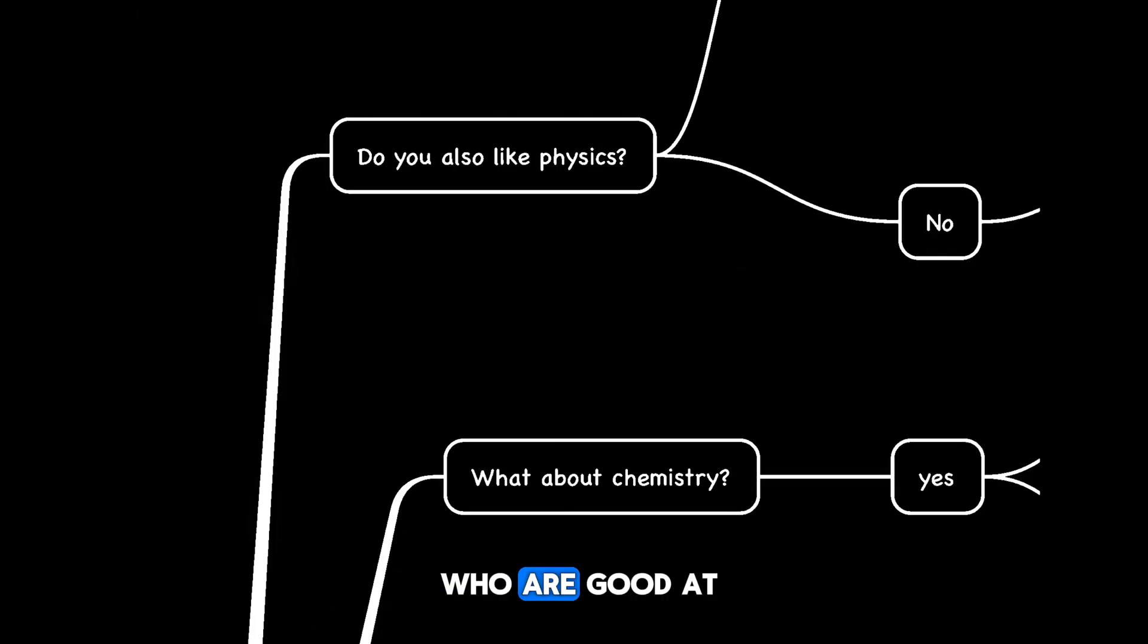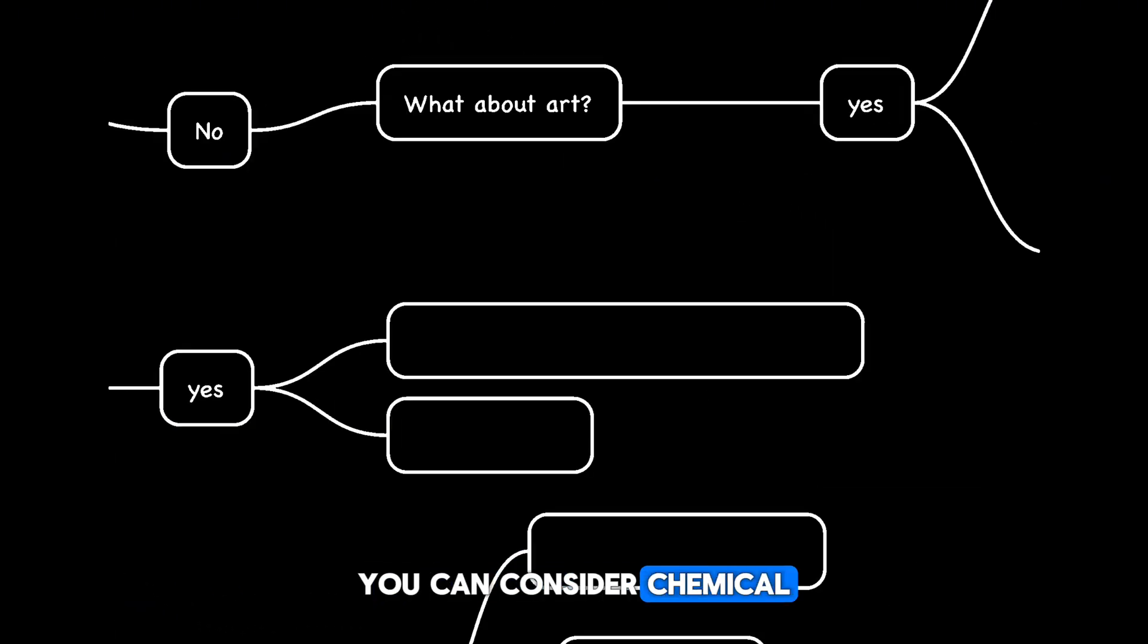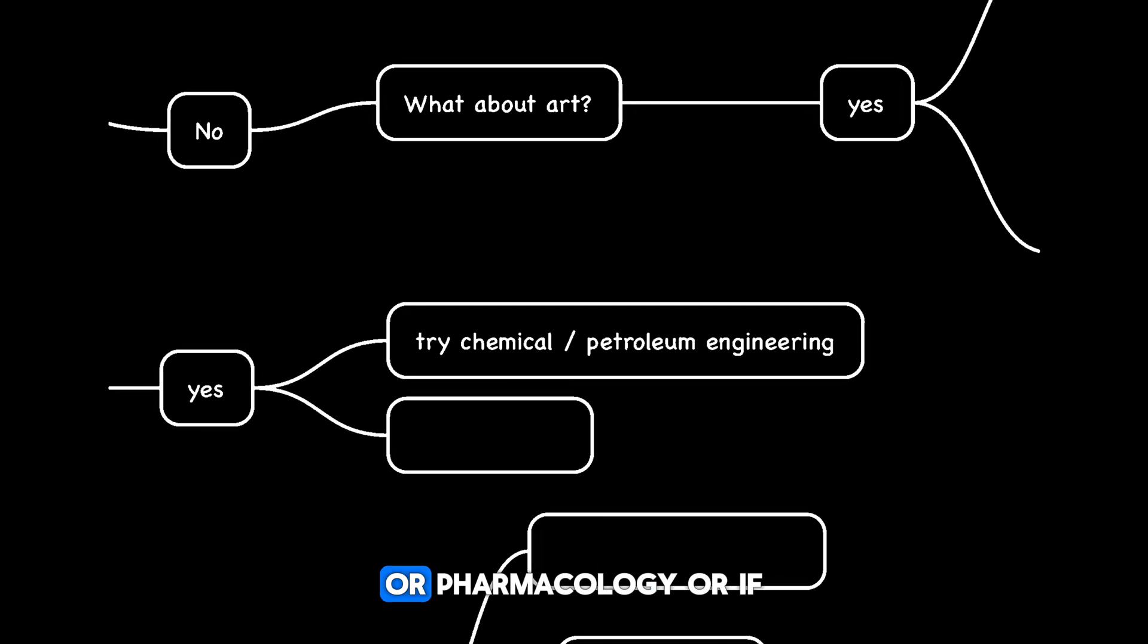There are many students who are good at both physics and chemistry. In this case, you can consider chemical or petroleum engineering or pharmacology.